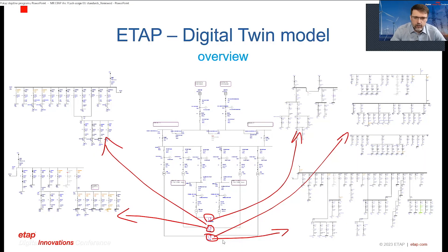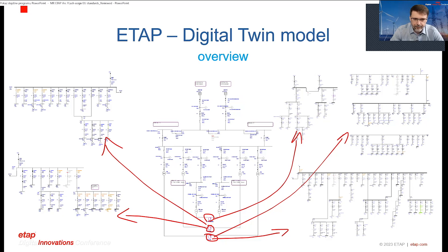That's the model — a site with six transformers, a medium voltage ring, and then low voltage sections. I will switch to it in a minute to show you. The goal after the study was to show DGUV results with variation for the KP factor using the Shao and Halinka method, compare DGUV with IEEE 1584, and check the overall implications for operation of this electrical installation.